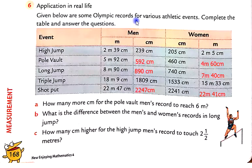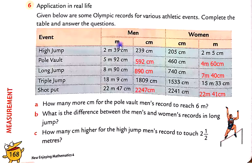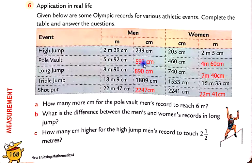Given below are some Olympic records for various athlete events. You will complete the table and answer the questions. Here, event names are written in this column, and then we have two main columns: men's and women's. In both columns, records are given in meters and centimeters. Men's records are given in meters and women's records are given in centimeters. The values written in red are the missing values. For example, 5 meters and 92 centimeters equals 592 centimeters. I'll write the other missing values similarly.